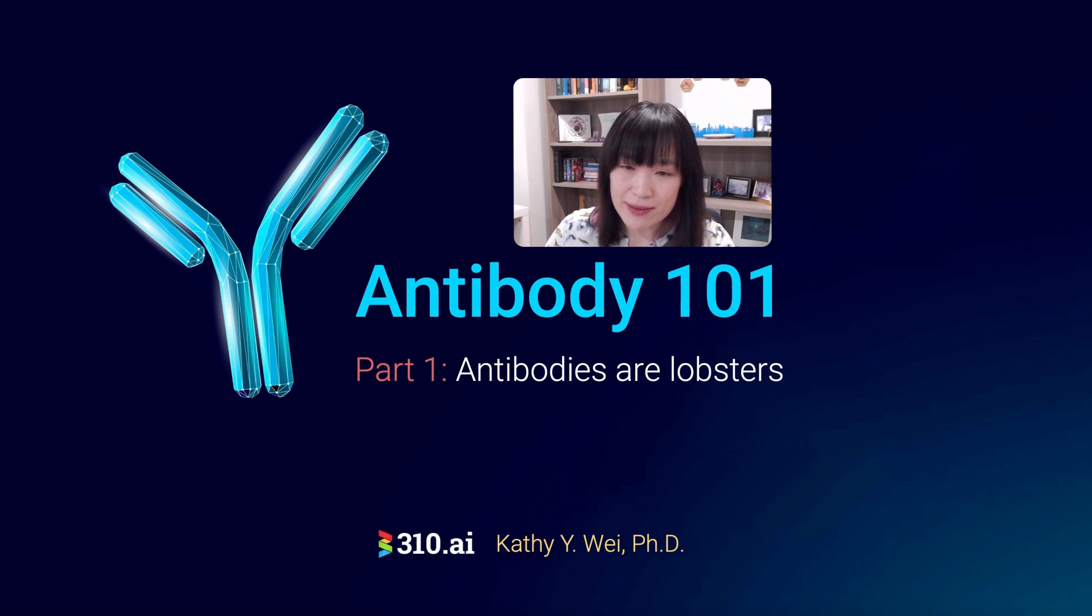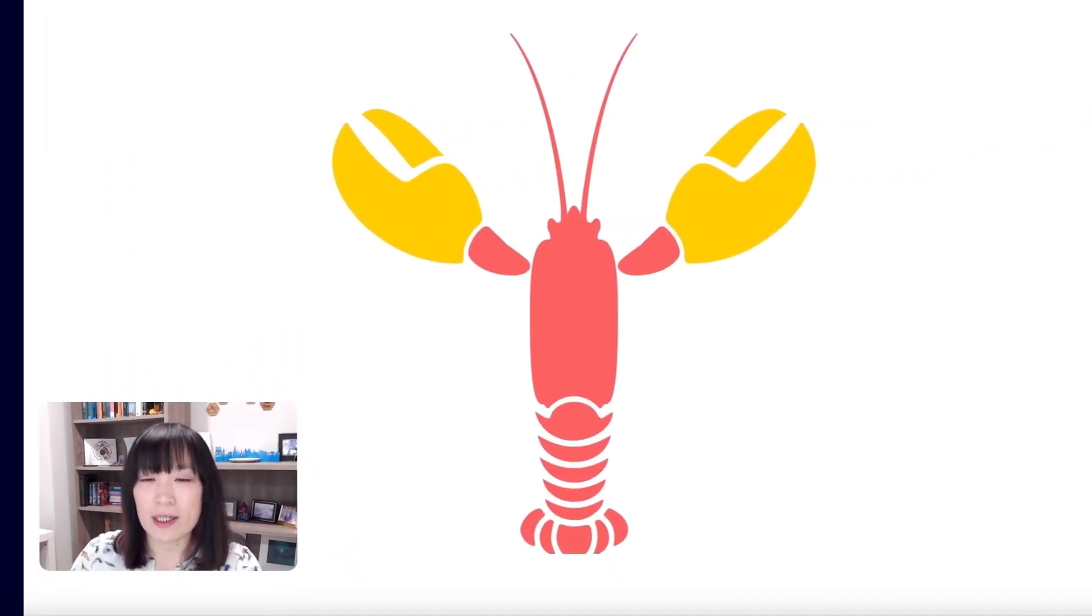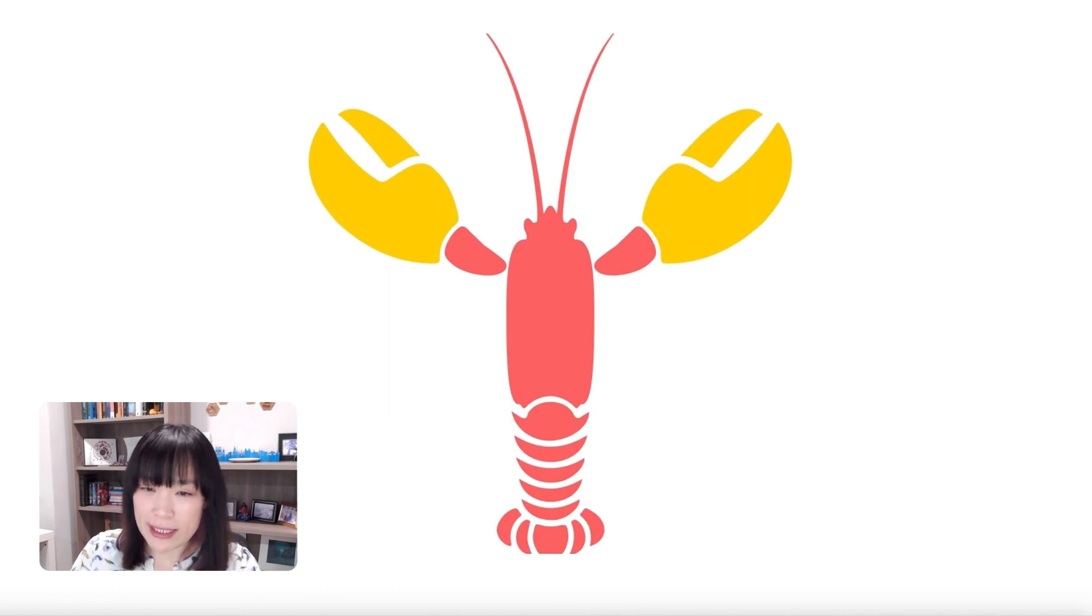Now let's get started. So today is part one of Antibodies 101, titled Antibodies are Lobsters. So why are antibodies lobsters? Well, they're roughly shaped like ones. So if you look at a lobster, it has a body and it has two claws, which are basically the business end of the lobster. And that's true for antibodies as well.